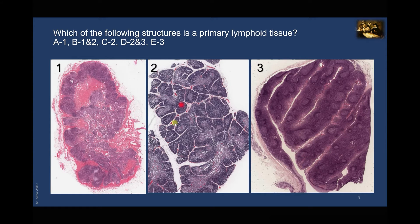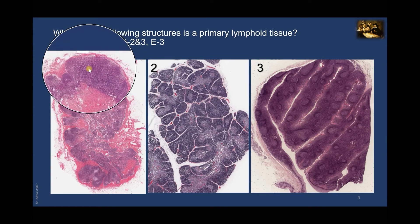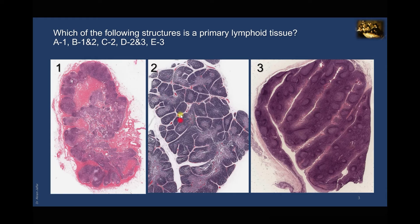Looking at slide two, it shows a lobulated organ invested by a fibrous capsule from which short interlobular septa radiate. You can see a dark-staining outer cortex and a lighter-staining inner medulla. The cortex does not show lymphoid follicles like those in a lymph node, so image two is not a lymph node — it is the thymus, a primary lymphatic organ where maturation of T lymphocytes takes place from lymphocytes derived from bone marrow. Therefore, the correct answer is C, image two only.